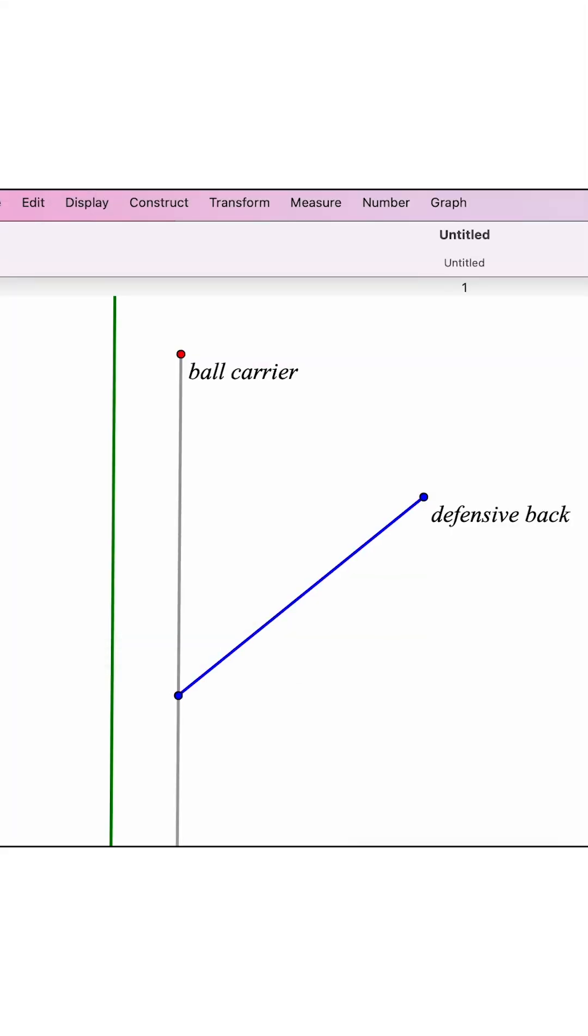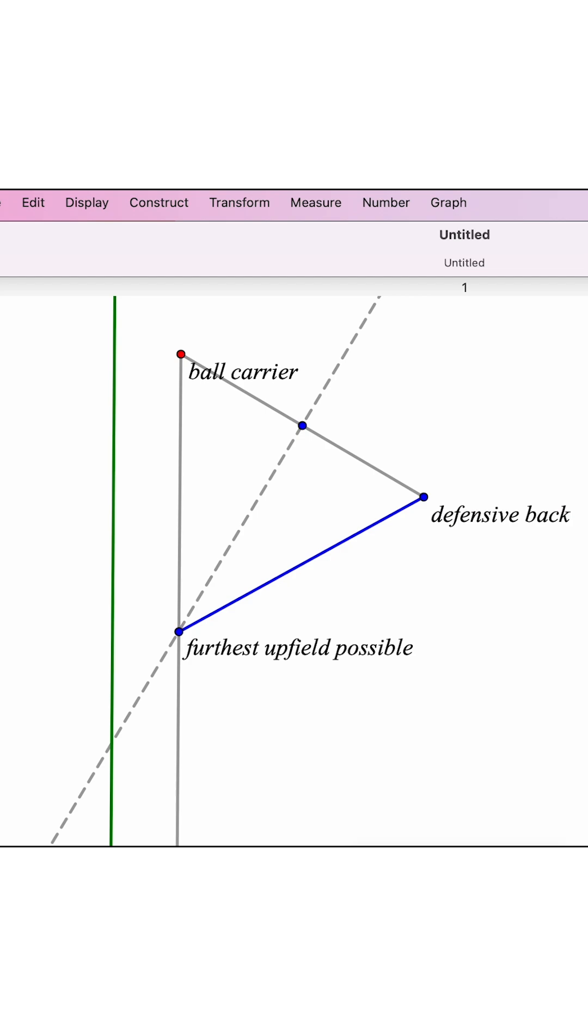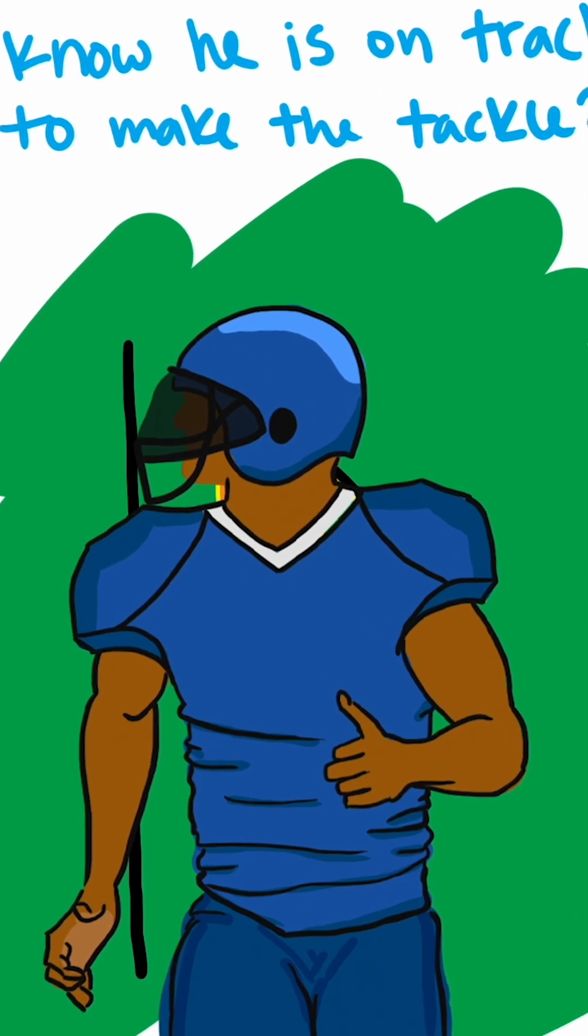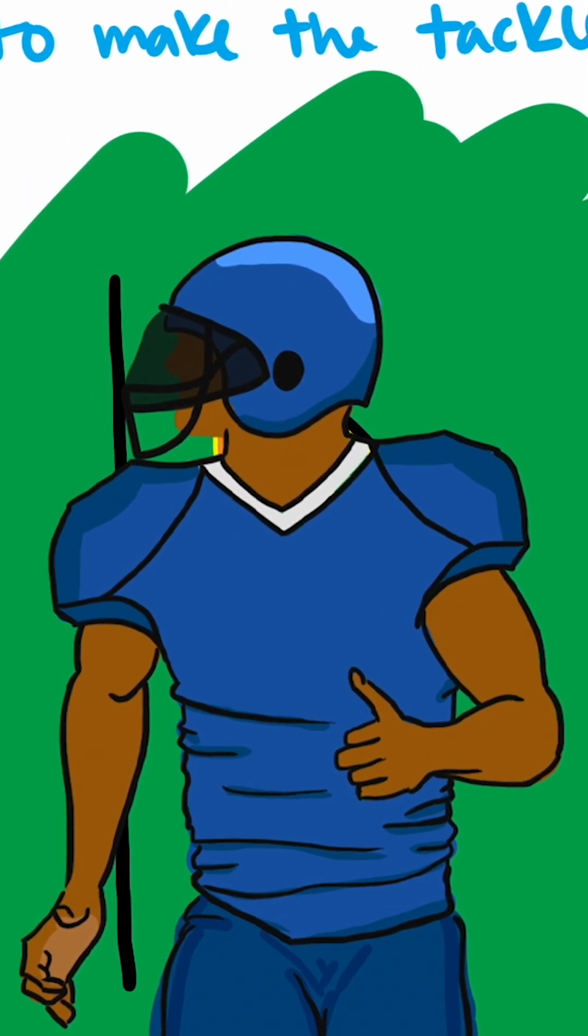So we figured out two helpful strategies for a defensive back. First, they can use the perpendicular bisector to find the isosceles triangle path. If they're running in a straight line and their head doesn't swivel while they watch the ball carrier, they are golden.